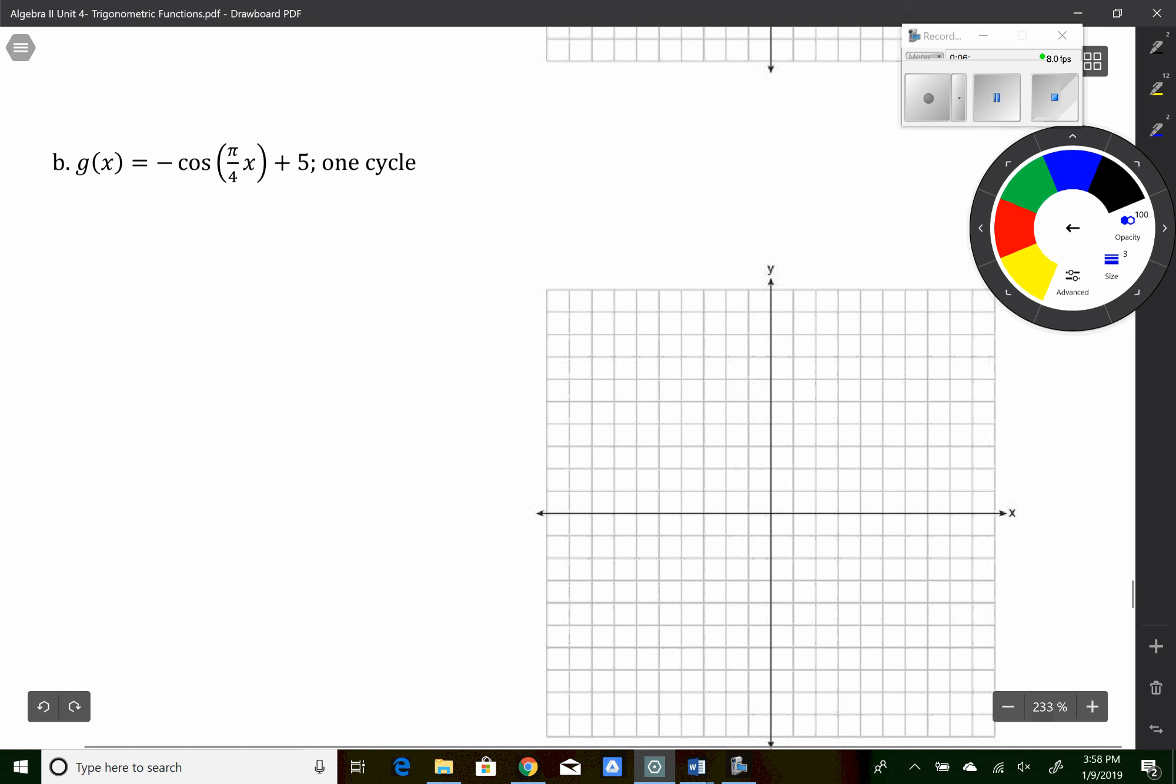The next one asks us to graph a cosine curve, but it just wants one cycle. So we could scale this out a lot, right? So we know that the amplitude is one. I know it's upside down because of the negative. I know the midline is y equals five. I know the frequency is pi over four. So if I do pi over four times period equals two pi, I can figure out the period is eight.